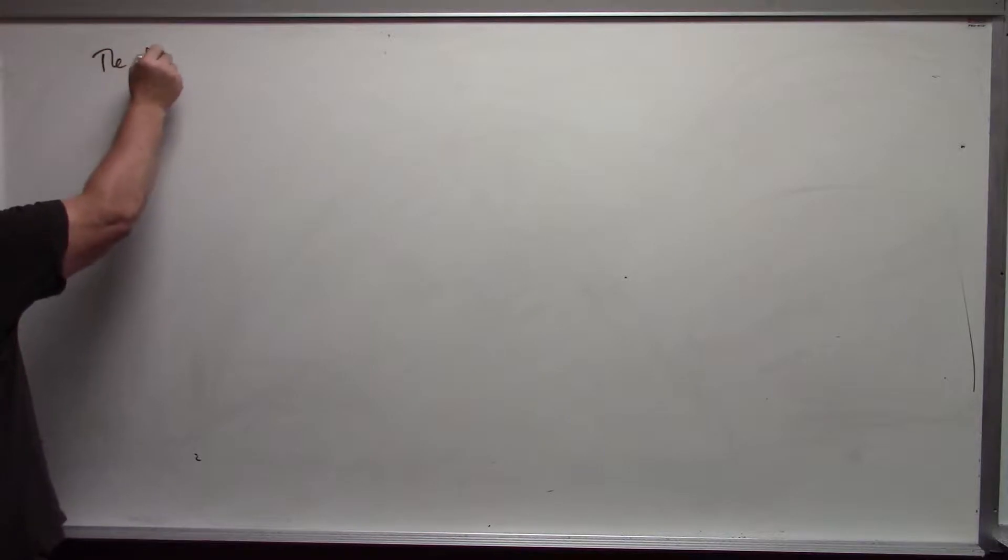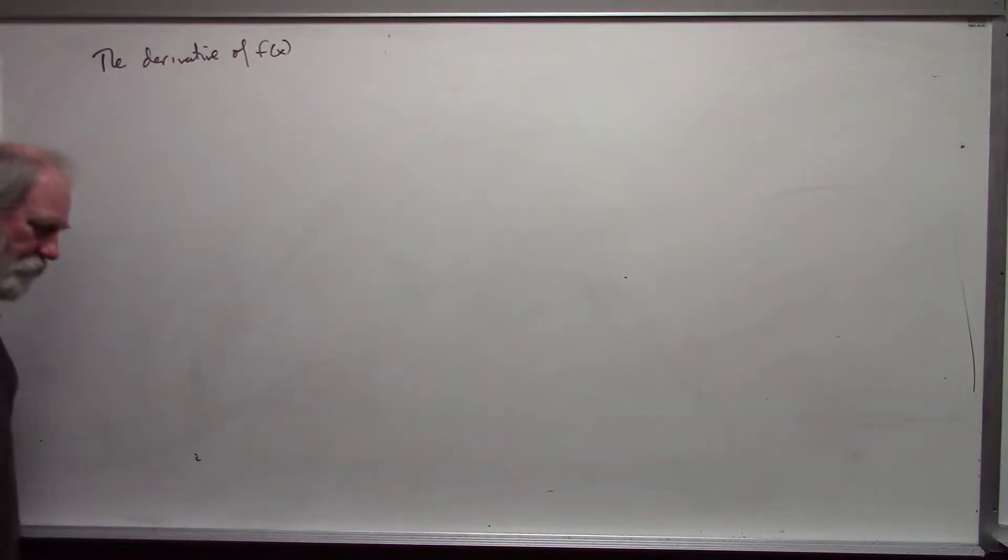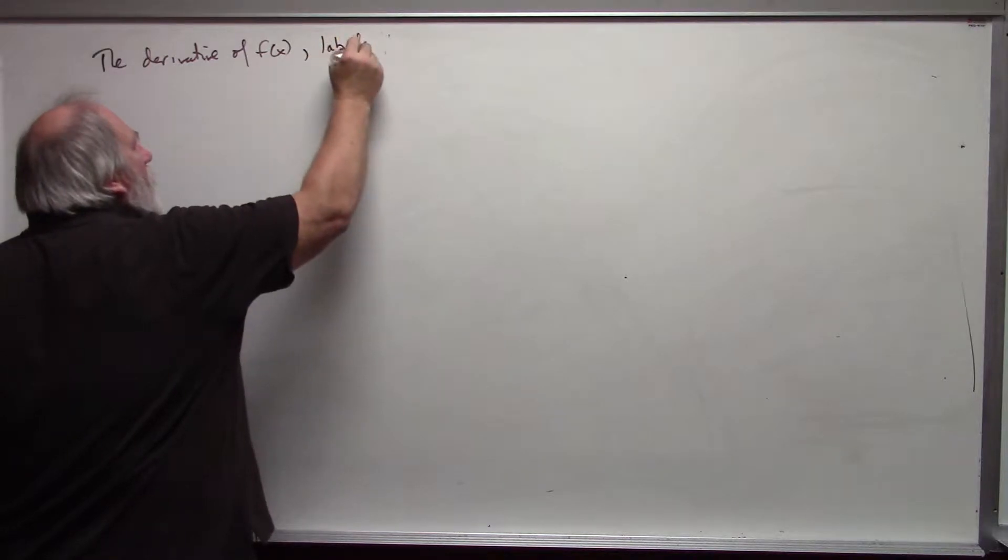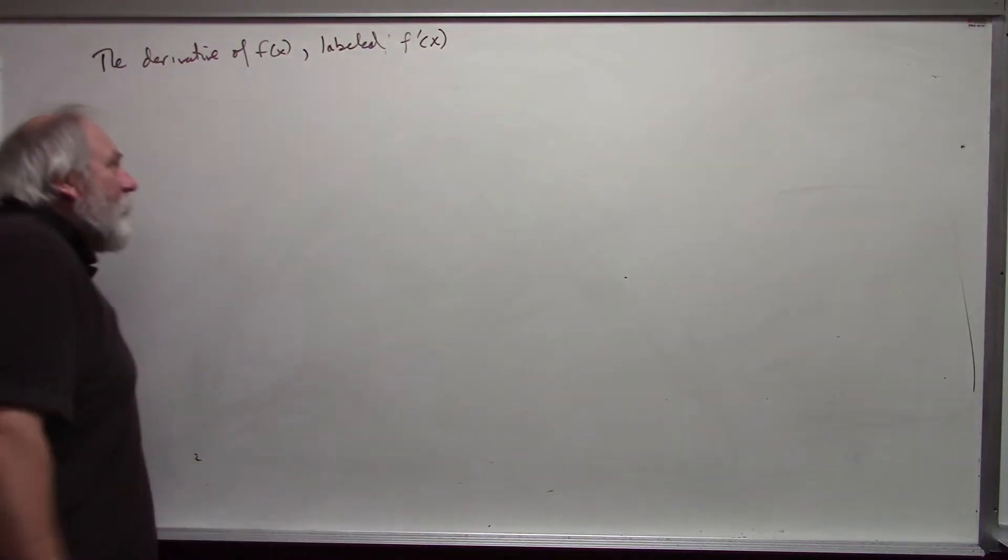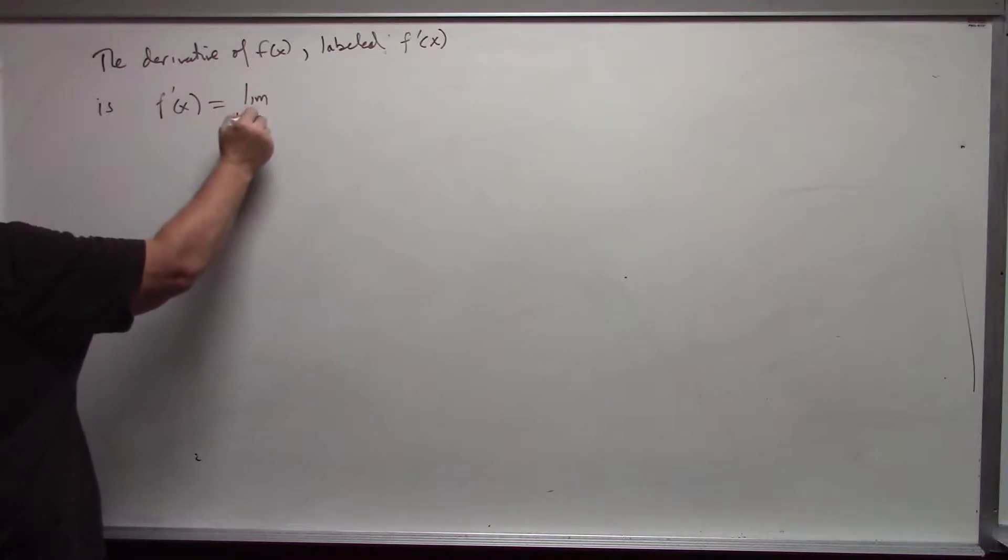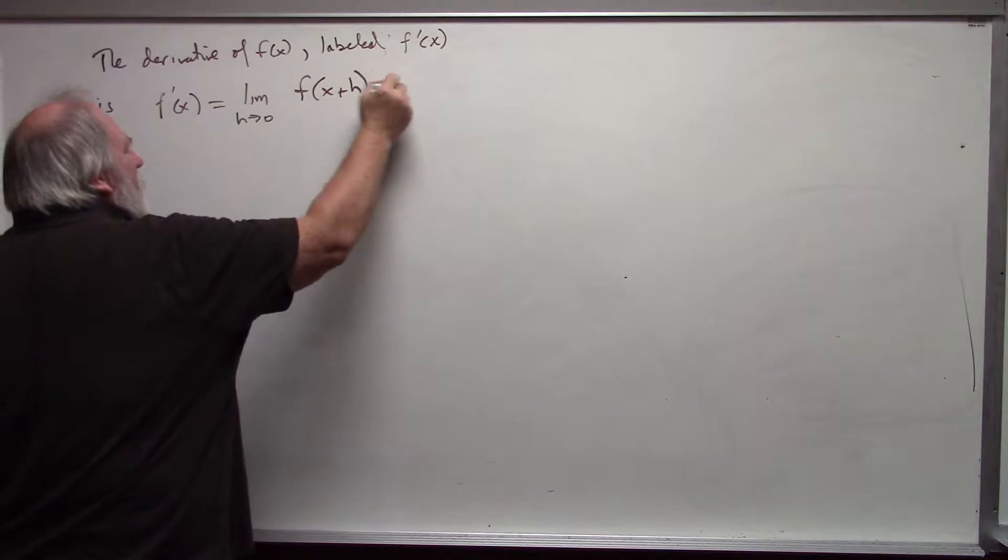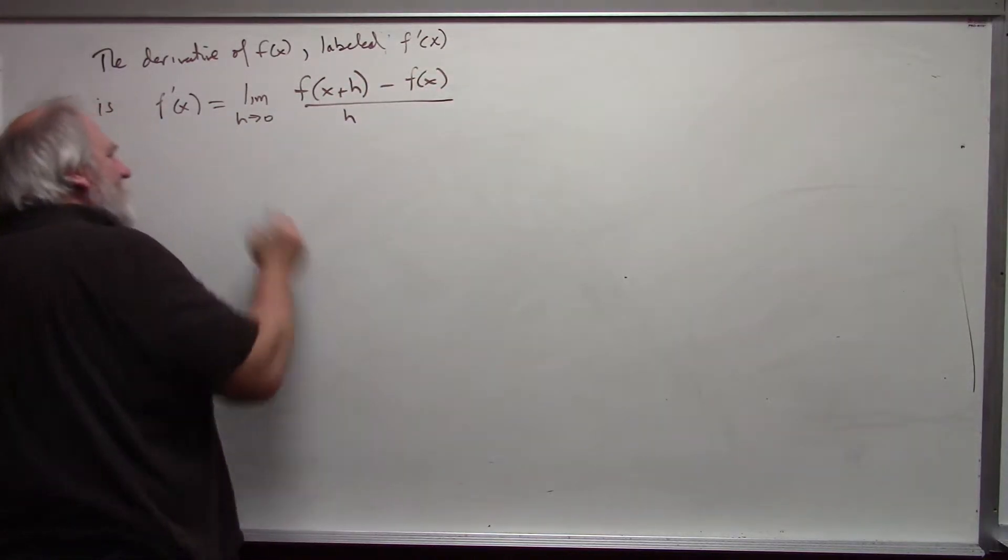The derivative of f of x, labeled f prime of x, is f prime of x equals the limit as h approaches 0 of f of x plus h minus f of x divided by h, if the limit exists.